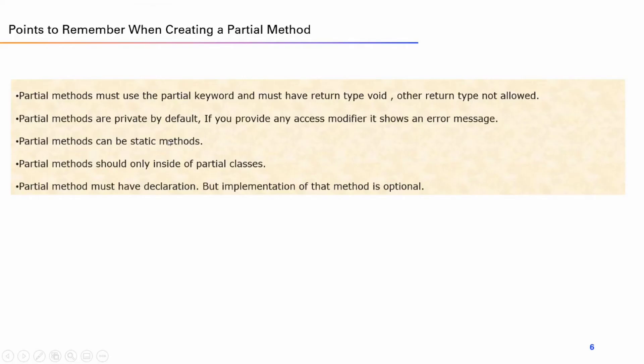Creating a Partial method — you should remember: Partial methods must use the Partial keyword and must have return type void. Other return types are not allowed. Partial methods are private by default; if you provide any access modifier, it shows an error message. Partial methods can be a static method. Partial methods should only be inside Partial classes. A Partial method must have a declaration, but implementation of the method is optional.